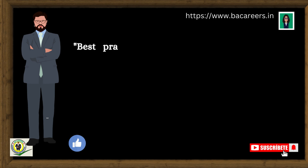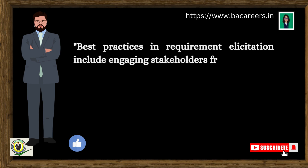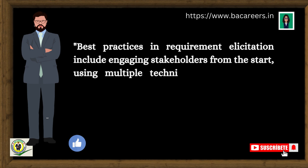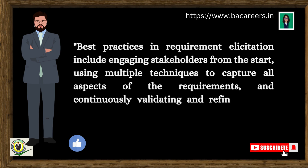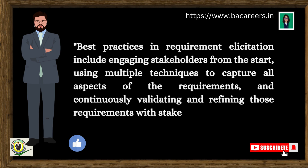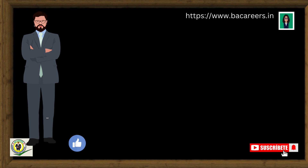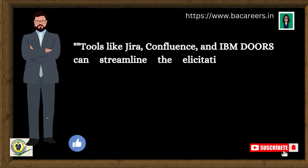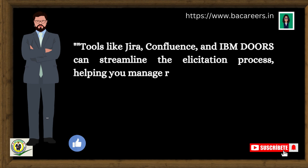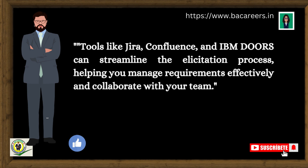Best practices in requirement elicitation include engaging stakeholders from the start, using multiple techniques to capture all aspects of the requirements, and continuously validating and refining those requirements with stakeholders. Tools like Jira, Confluence, and IBM Doors can streamline the elicitation process, helping you manage requirements effectively and collaborate with your team.